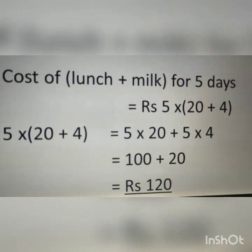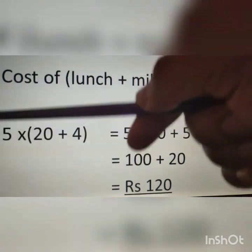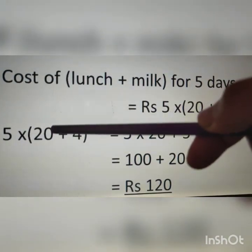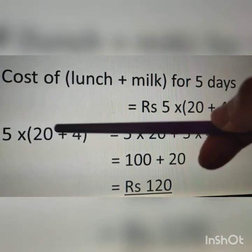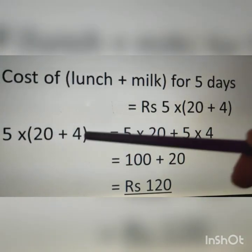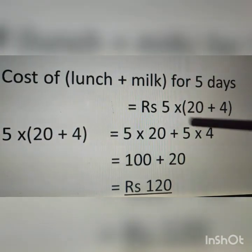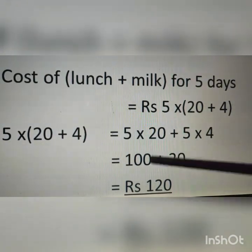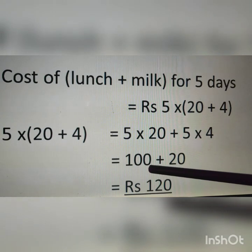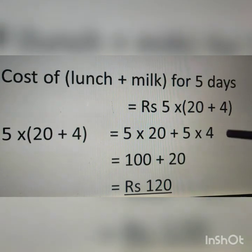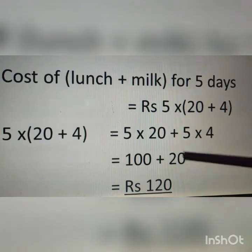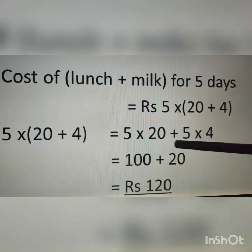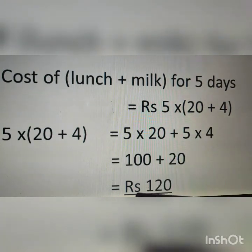By the distributive property we can write 5 × 20 + 5 × 4. 5 × 20 equals 100, plus 5 × 4 equals 20. Therefore 100 + 20 equals rupees 120.